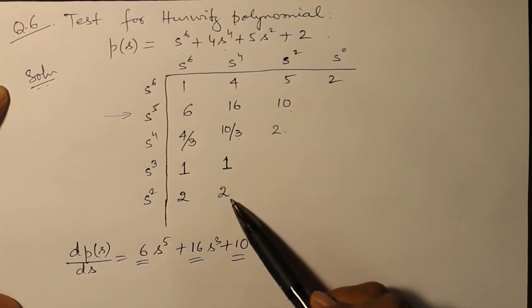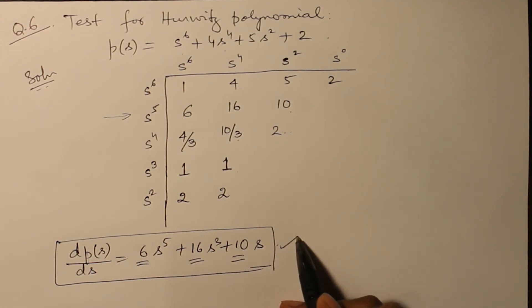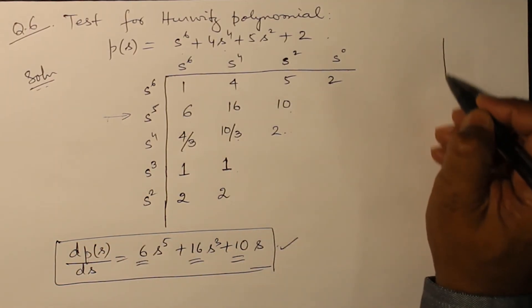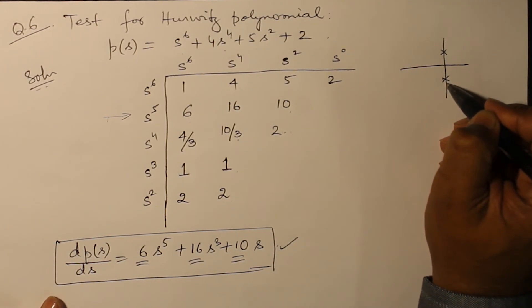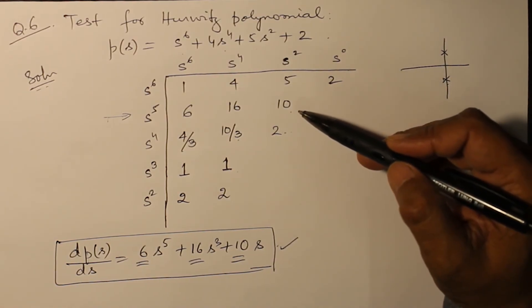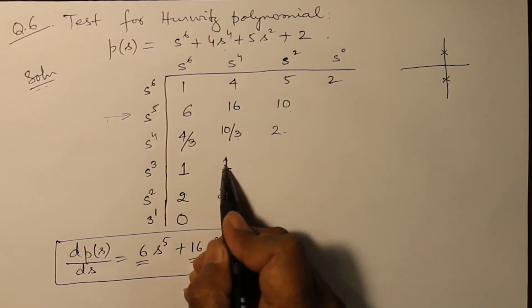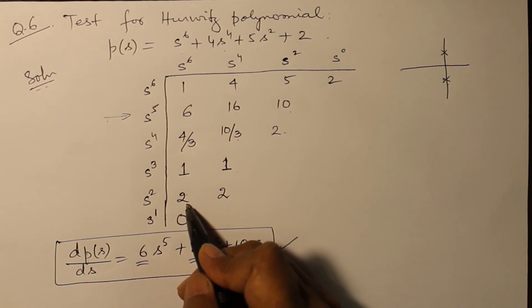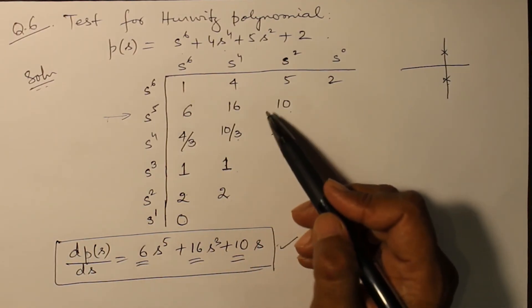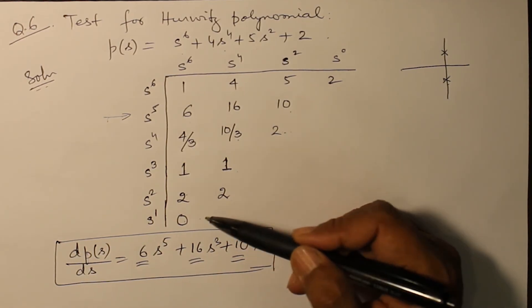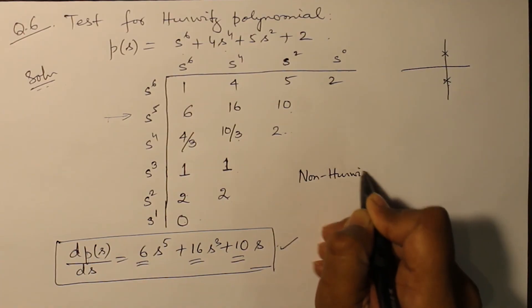Now, once we have already used auxiliary polynomial, differentiated it and used those terms, it means on the j omega axis when there were simple poles, that has been removed by taking the differentiation and then replacing it by the coefficients of the differentiated term. Now if again for the next row you get a - 2 into 1 is 2 minus 1 into 2 is 2, that divided by 2, that is 0 and all the elements of a row are 0. So if there would not have been this exercise earlier, we would have done it here, but you can do it only once. That's why this becomes a non-Hurwitz polynomial.